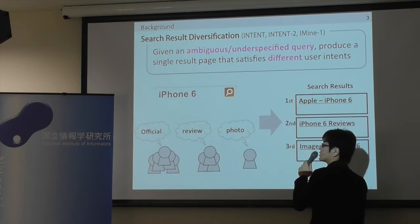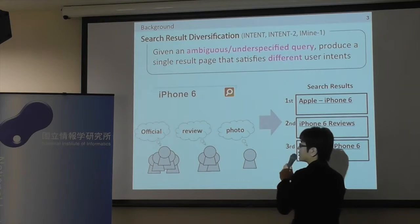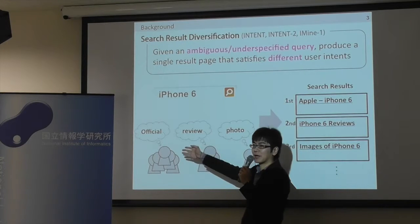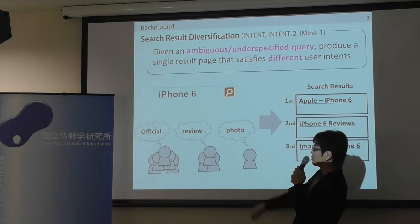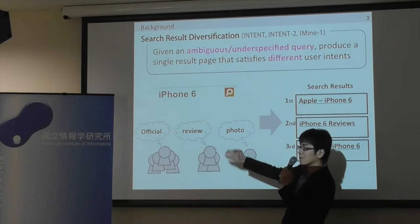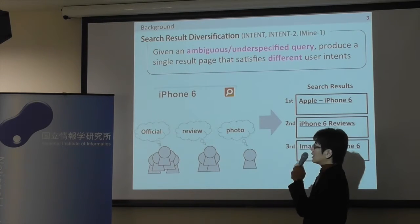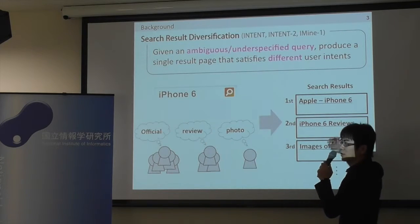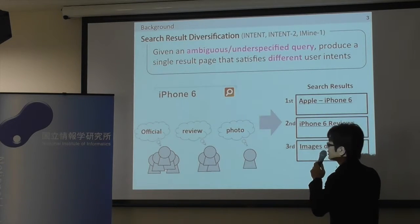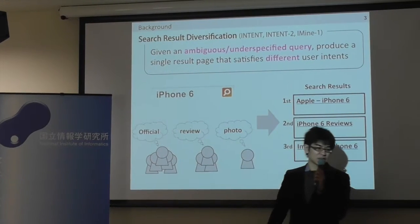Suppose the user issued a query 'iPhone 6'. Many users may want to find the official page of iPhone 6, some people may want to find reviews, and others may want to find photos. The problem of search result diversification is to generate a diversified search result that can satisfy these different user search intents.